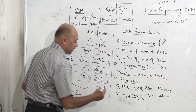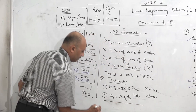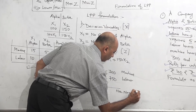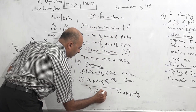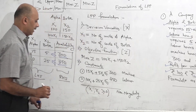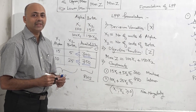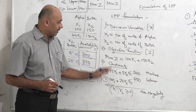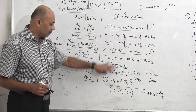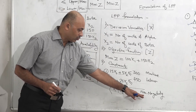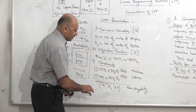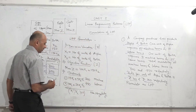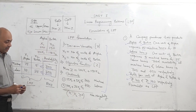After completing the formulation, at the end as a formality we write one more constraint called non-negativity: x1, x2 greater than or equal to 0. This means the values of x1 and x2 cannot be negative, because the variables have to be positive or zero. Variable values cannot be negative. This is a common constraint for all LPP formulations. Our main formulation ends with the two resource constraints, and the non-negativity constraint is added as a formality.